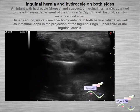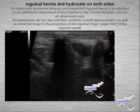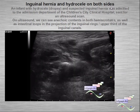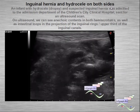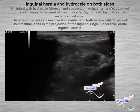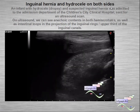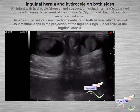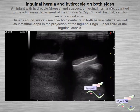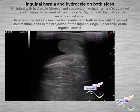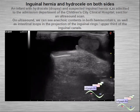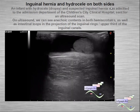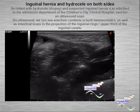In another case of inguinal hernia with hydrocele on both sides: an infant with hydrocele and suspected inguinal hernia was sent for ultrasound. We can see anechoic content in both hemiscrotums as well as intestinal loops inside the inguinal rings or upper third of the inguinal canal.